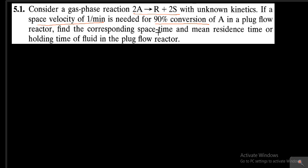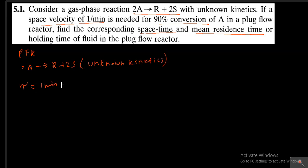We need to find the space time and mean residence time of the fluid in the plug flow reactor. Tau is equal to 1 by S, which equals 1 by 1 minute inverse, giving tau equal to 1 minute. XA is equal to 0.9 as per the given data.